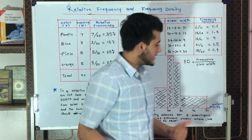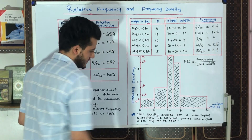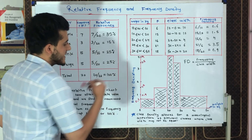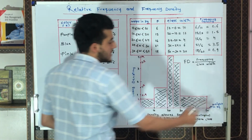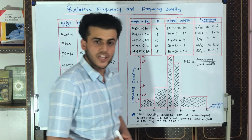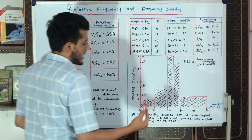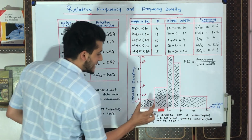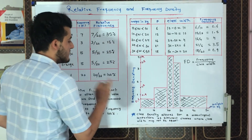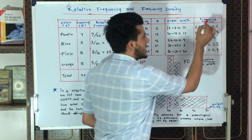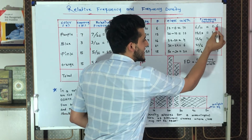To draw the histogram, on the y-axis we plot frequency density, and on the x-axis we plot the weight of children in kilograms. The x-axis runs from 0 to 50 kg, considered in class intervals, and the frequency density values range from 0.6 to 4.